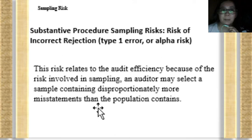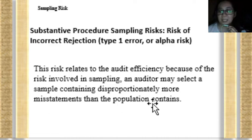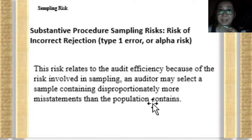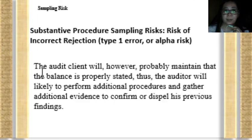The auditor may select a sample containing disproportionately more misstatements than the population. Probably just a small amount of misstatement is included in the sample, but for the whole population it is not considered material. The audit client will probably maintain that the balance is properly stated; thus, the auditor will likely perform additional procedures — that is why audit efficiency is being affected.